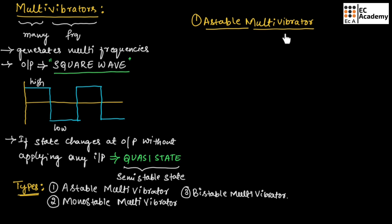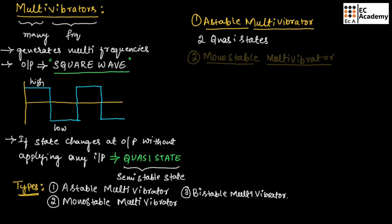In an astable multivibrator, there are two quasi states. Without giving any input voltage, we get two states at the output — a high state as well as a low state. So in an astable multivibrator we need not give any input; we will get the output with two states. That is why astable multivibrators are said to have two quasi states.